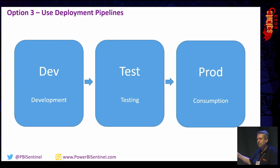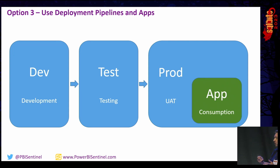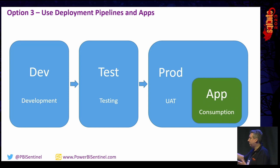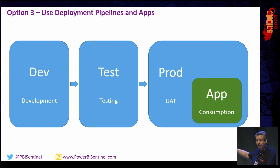You can go one stage further and in your prod workspace turn that into an app, using the prod workspace for UAT with a small subset of trusted power users doing user acceptance testing. Once they're happy, you update the app for consumption by everyone. That divides your unit testing from a dev perspective from UAT from the user perspective. You can have different source data between dev, test, and UAT environments by configuring parameters, so the same report and dataset pull from a different data source in each environment and the promotion manages that for you.